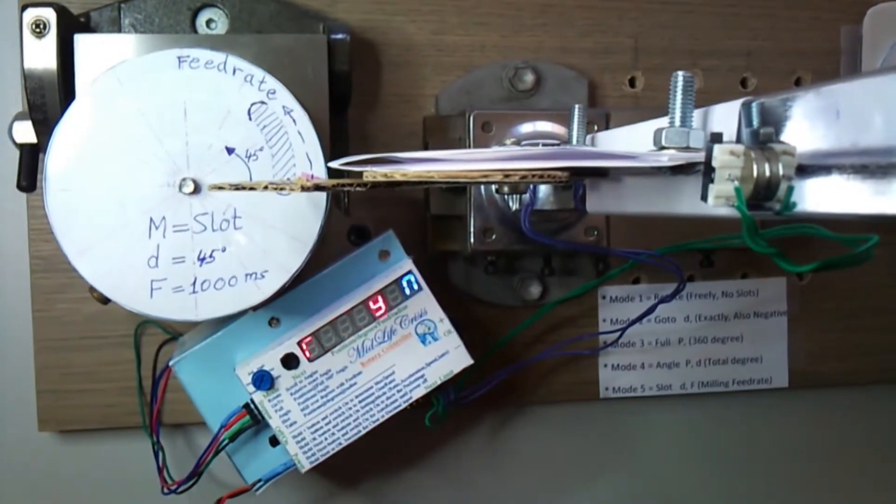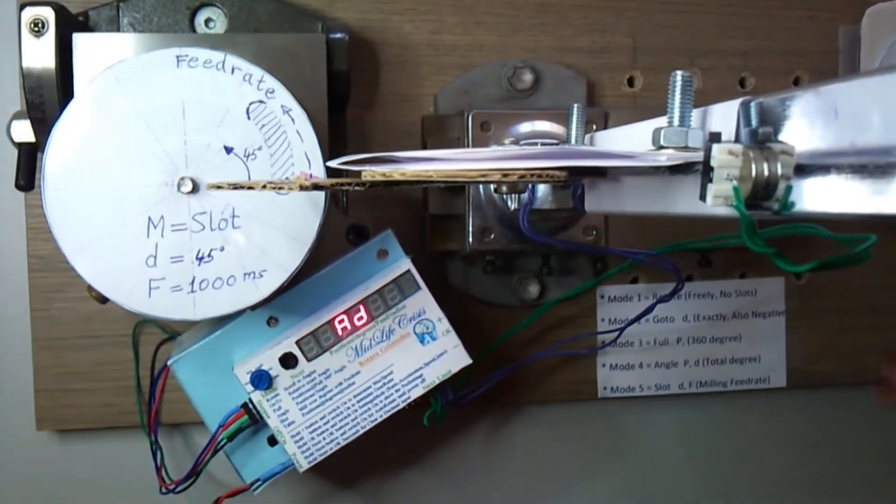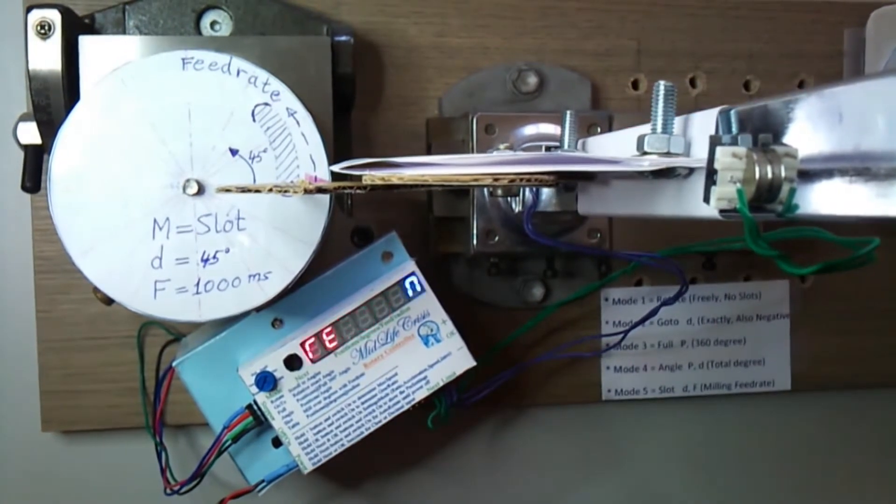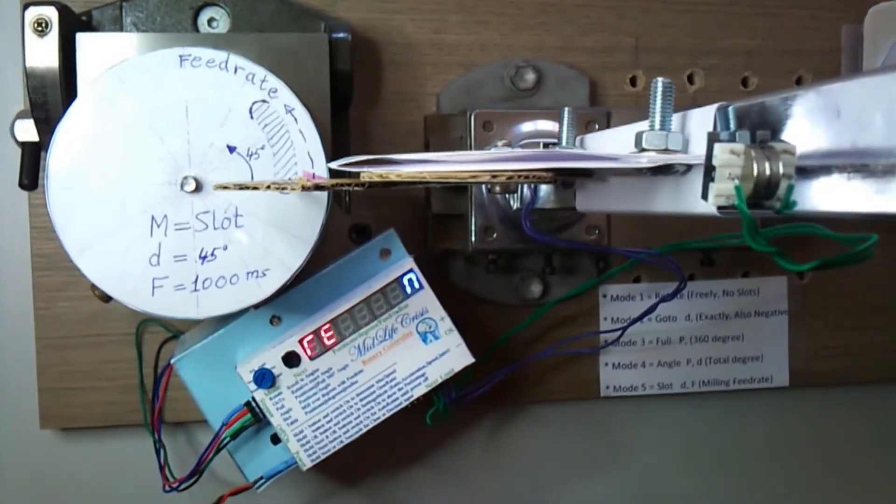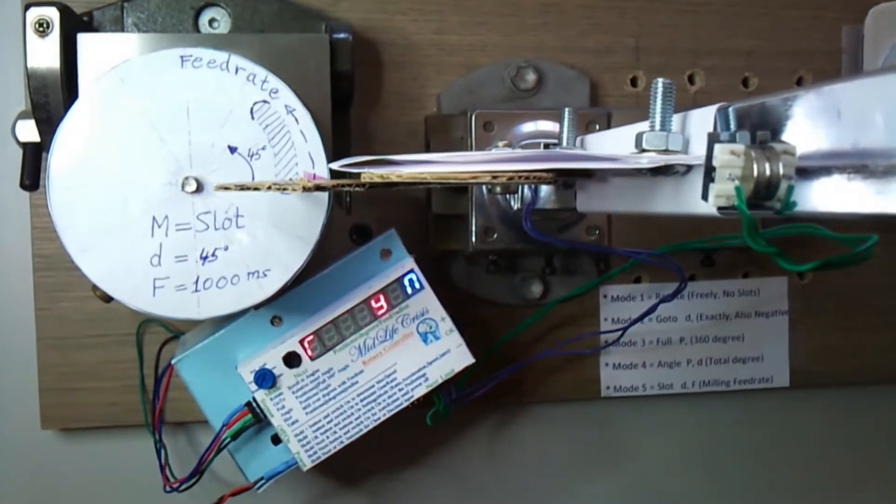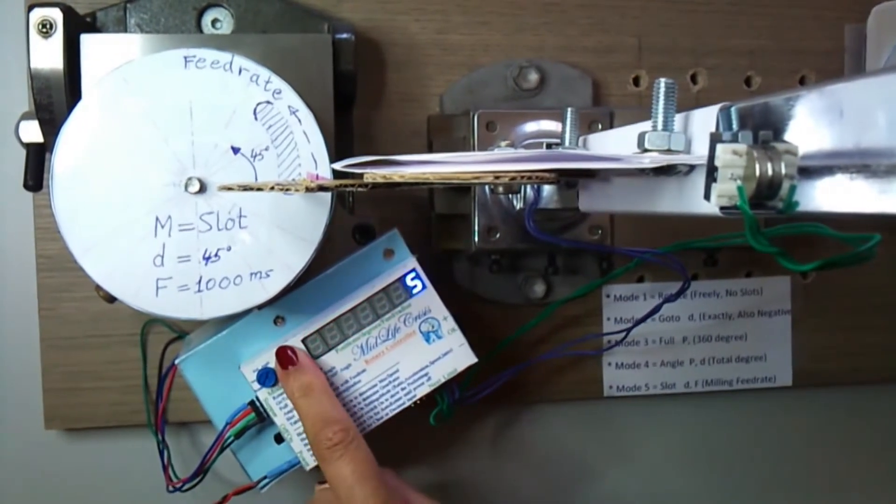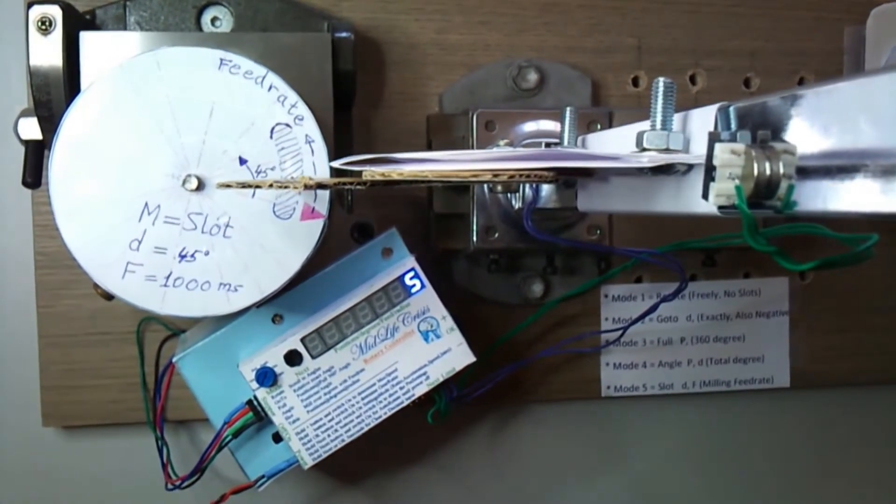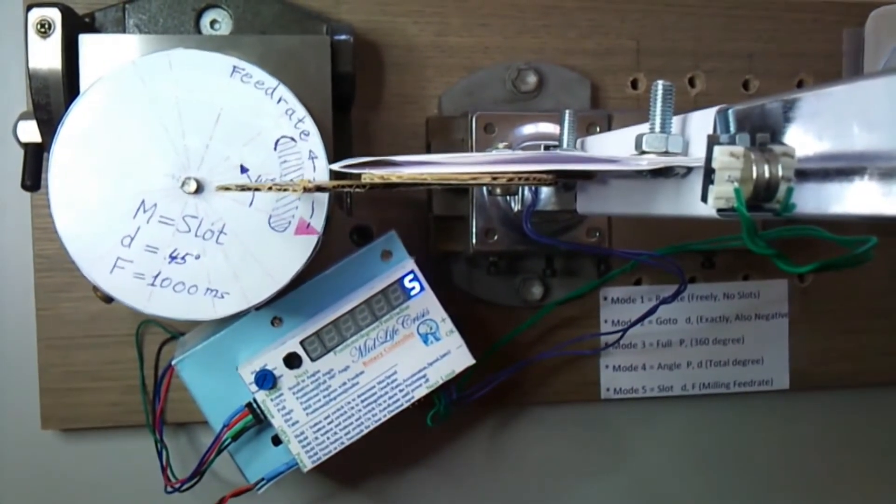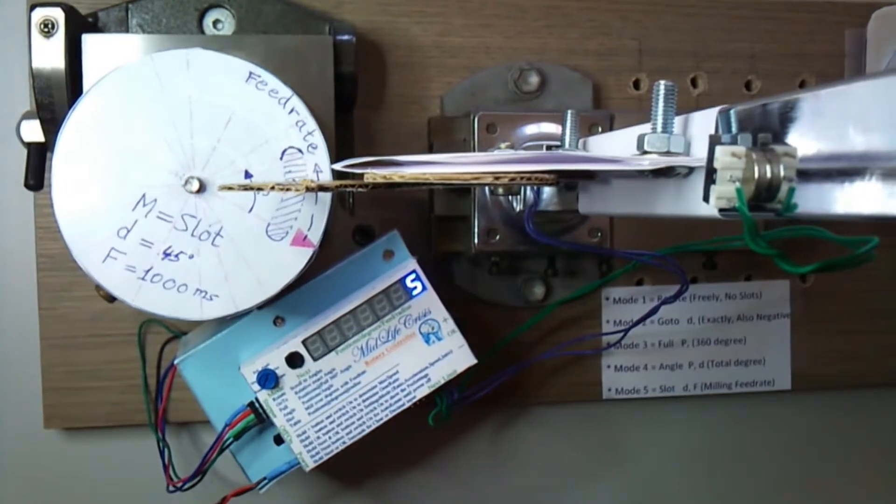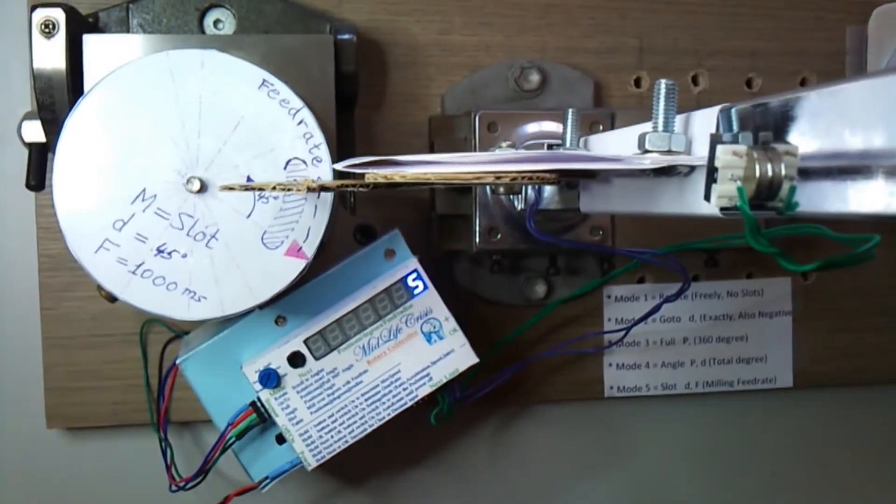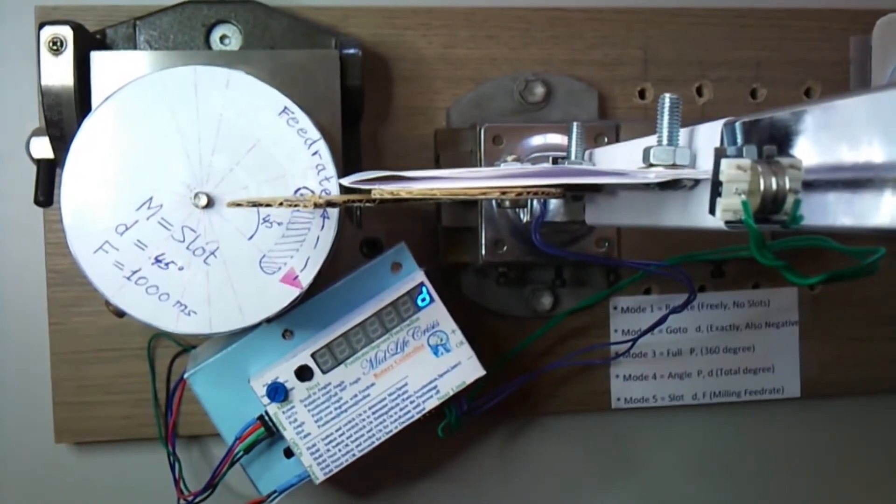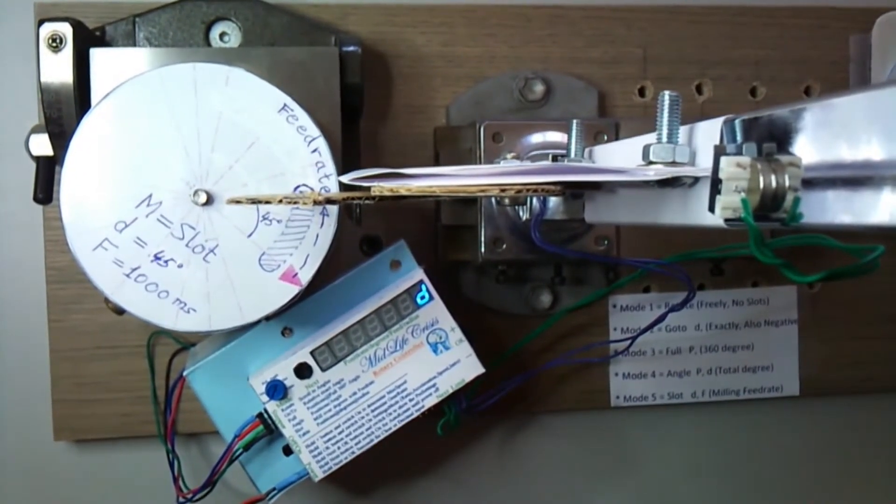We start the mill and lower it into the workpiece to start milling. Now we press next to start milling the slot and get a little bit deeper.